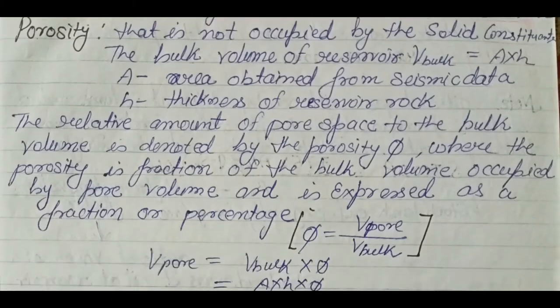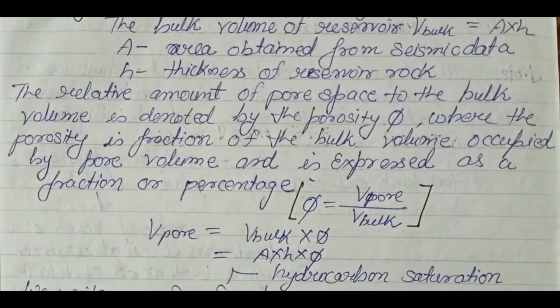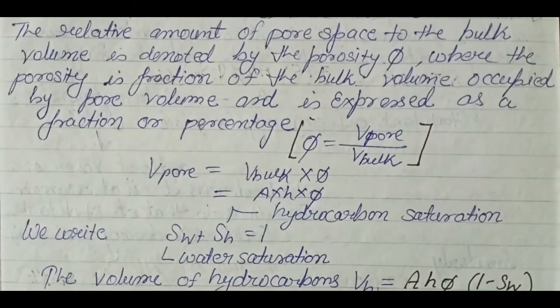Porosity is the fraction of bulk volume occupied by the pore volume. So phi equals V-pore upon V-bulk. From this, V-pore equals V-bulk times phi, and since V-bulk equals area times height, V-pore equals A times H times phi — where area comes from seismic data, H is the thickness of the reservoir, and phi is the porosity.